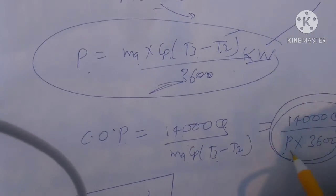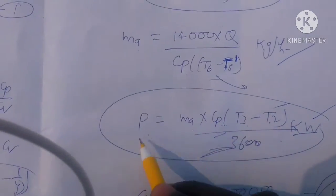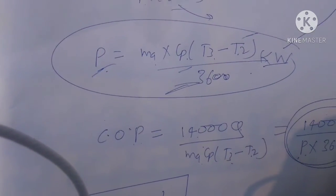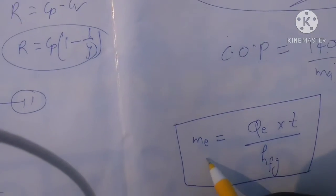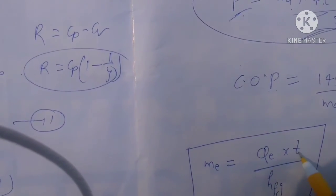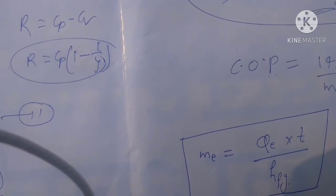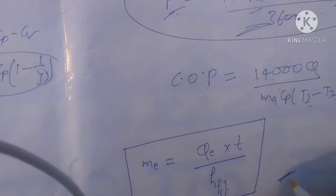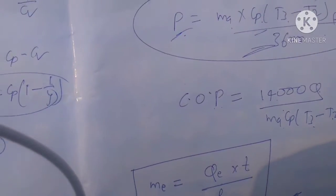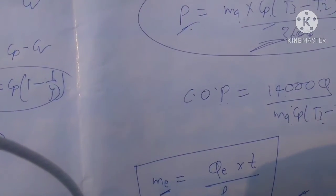It will become 14000 Qp, denoted here as P, multiplied by 3600. After that, me equals Qe multiplied by t divided by hfg.